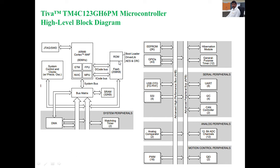The RAM contains bootloader driver library files, an advanced encryption system, and cyclic redundancy check. Flash memory capacity is 256 KB. The microcontroller contains an on-chip ARM Cortex M4F processor providing 80 MHz clock frequency, with on-chip peripherals including embedded trace macrocell for tracing instructions, floating point unit for floating point operations, memory protection unit to avoid unauthorized memory access, and a vector interrupt controller for efficiently scheduling interrupts and reducing interrupt delay.